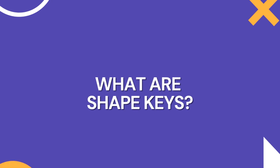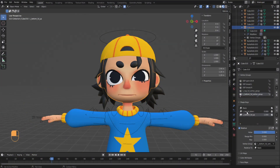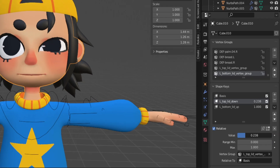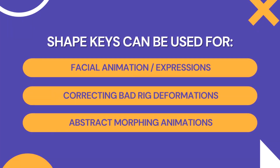Shape Keys, also known as Morph Targets or Blend Shapes, are a feature in Blender that allow you to deform a 3D model by defining a series of target shapes. These shapes can represent different states of the model, such as facial expressions. Most commonly, Shape Keys are used for facial animation or for correcting areas where your model doesn't deform well once it's rigged — those are called corrective Shape Keys.